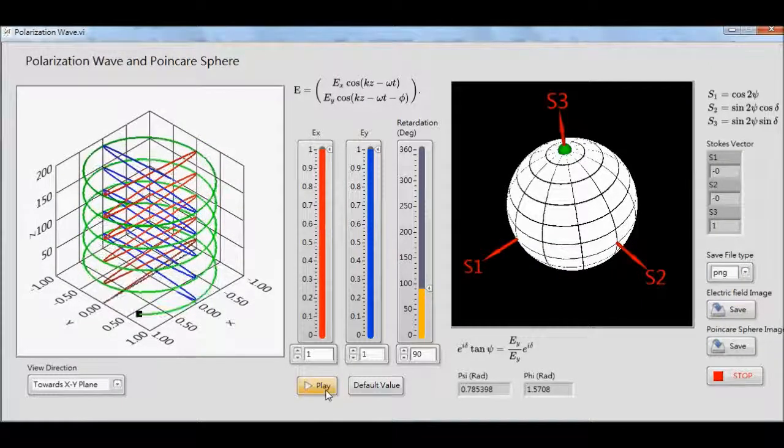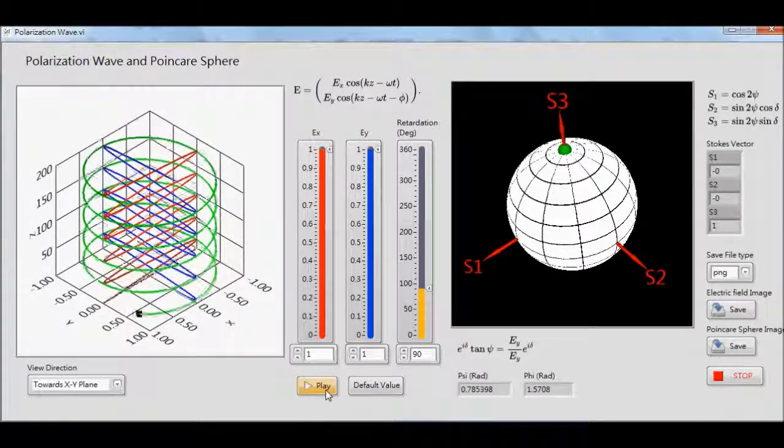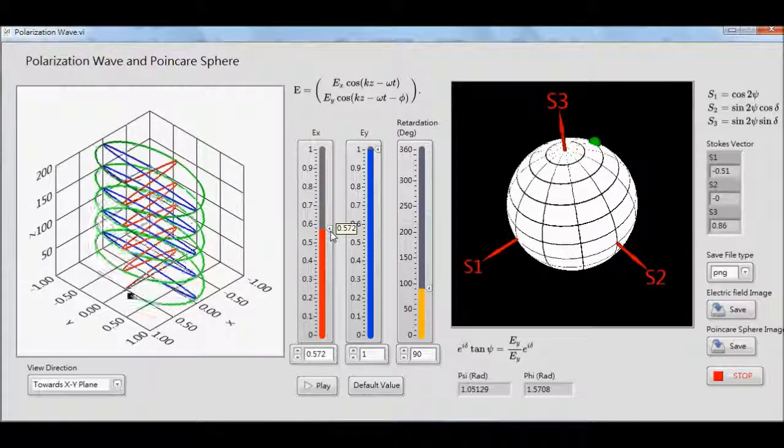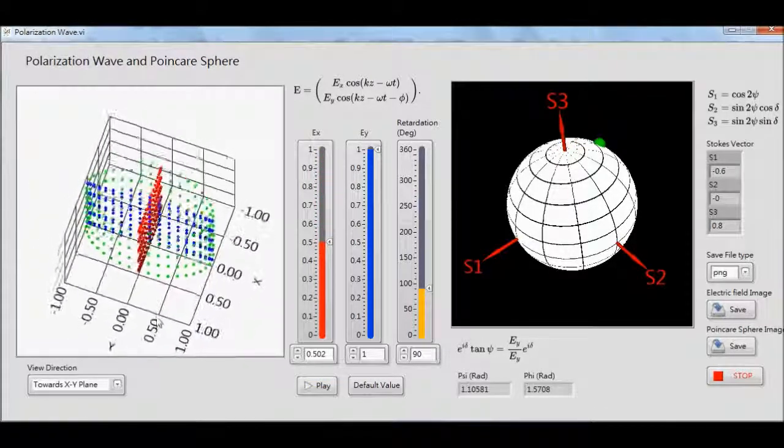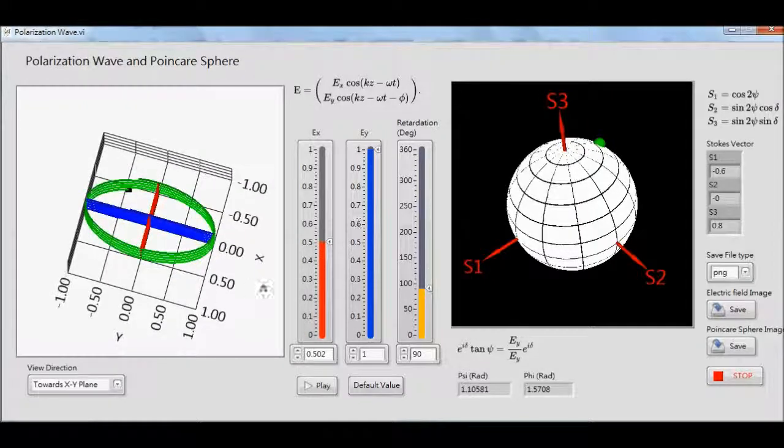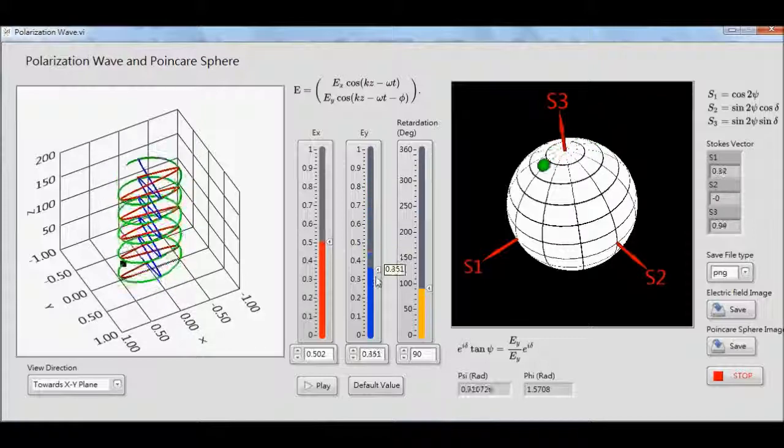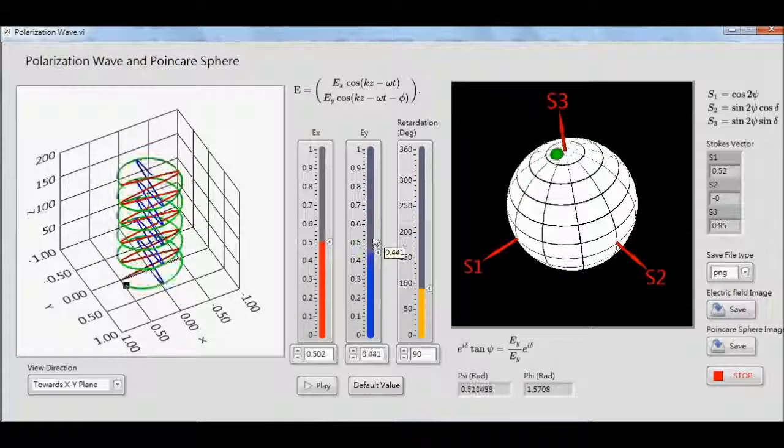Polarization is a property applying to transverse waves that specifies the geometrical orientation of the oscillations. In a transverse wave, the direction of the oscillation is transverse to the direction of motion of the wave, so the oscillations can have different directions perpendicular to the wave direction.